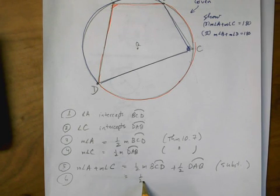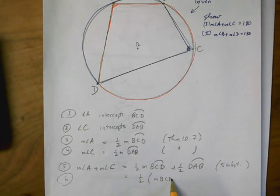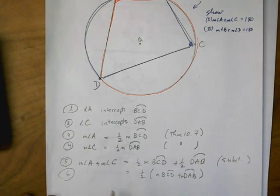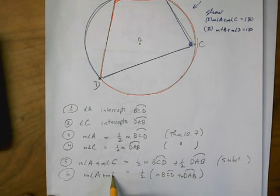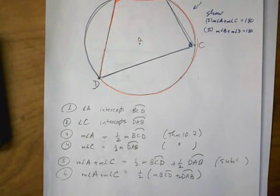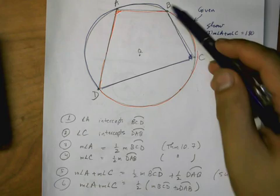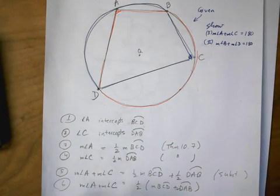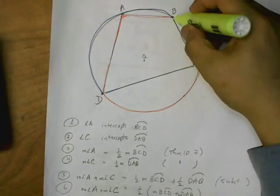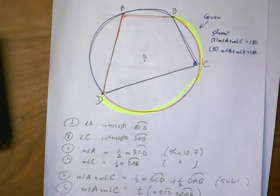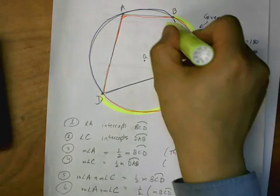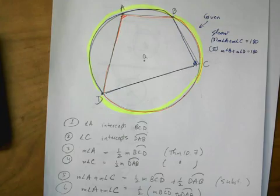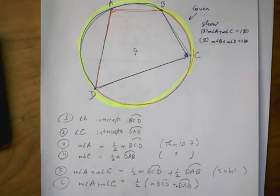Now I'm going to factor out the one half here. But wait a minute, let's look at these two arcs again. Arc BCD is this red one here, and this time I'll highlight it—BCD is this red one right here. And DAB is the blue one over here. So if we add them both together, then you can see that it makes a full circle.